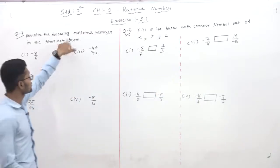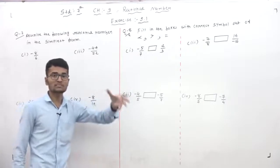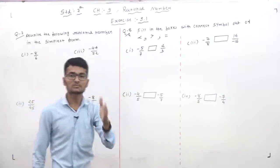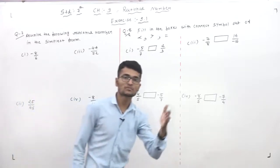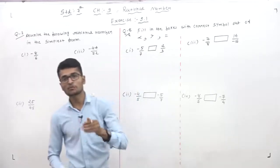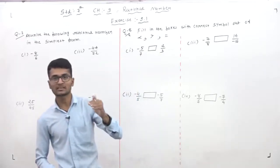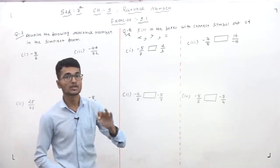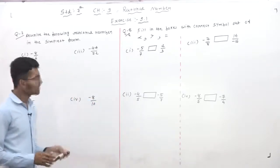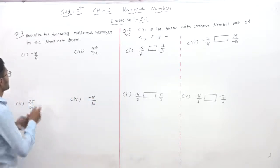Dear students, what do you mean by simplest form? Simplest form means the maximum cut — you have to cut the numerator and denominator by the maximum possible number. This is called the simplest form.